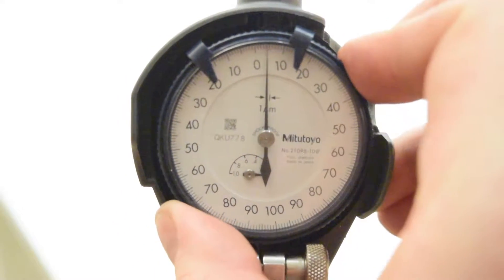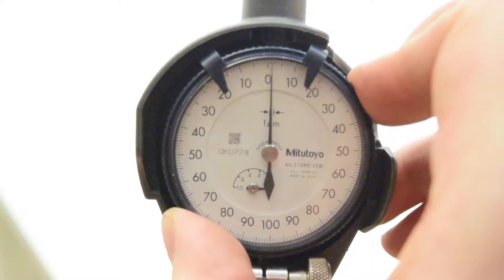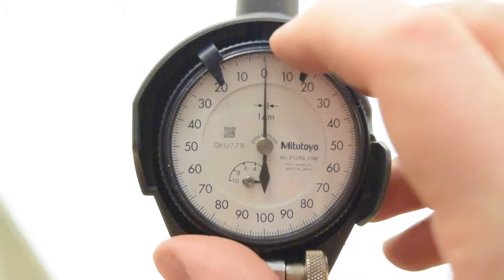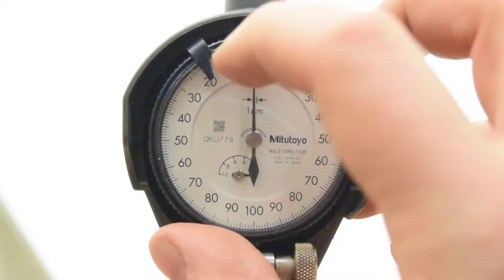The dial is marked plus or minus 100 microns either side for comparator readings and it also has a rotational counter up to 1 millimeter.